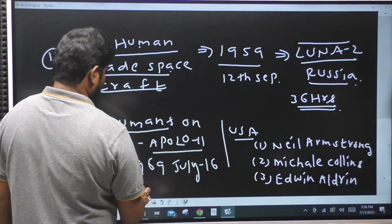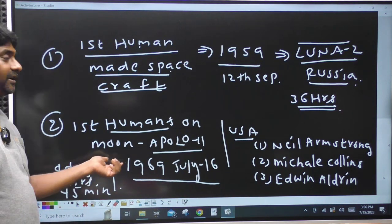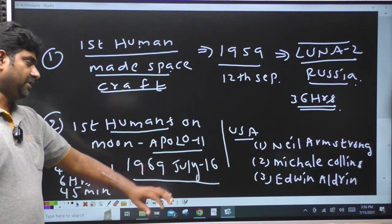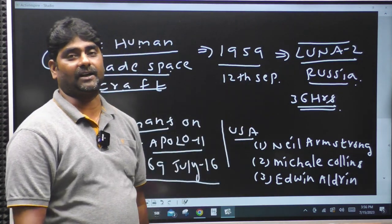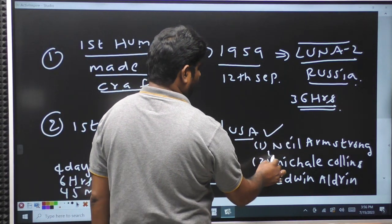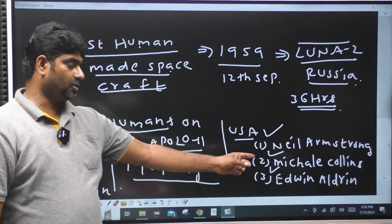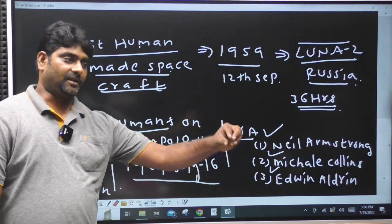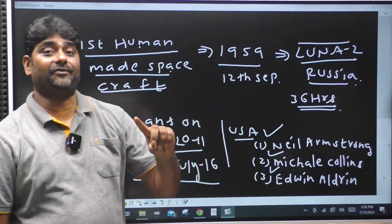Apollo 11 launched on July 16th, 1969, using the Saturn 5 rocket. The three crew members were Neil Armstrong, Michael Collins, and Edwin Aldrin Jr. They landed at the Sea of Tranquility on the Moon.